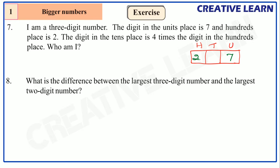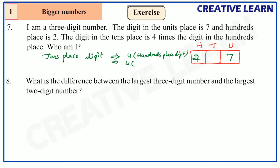The tens place digit is four times the hundreds place digit. In the hundreds place we have 2, so the tens place digit is 4 times 2, which equals 8. So in the tens place we write 8. The answer is two hundred and eighty-seven. Here I am doing it the short way.